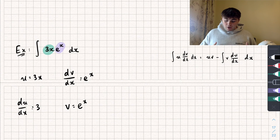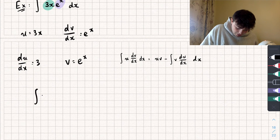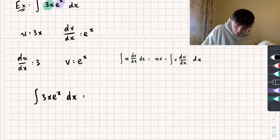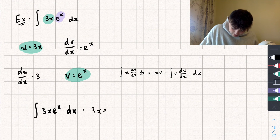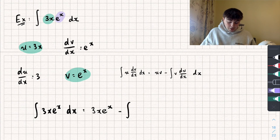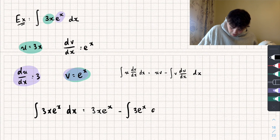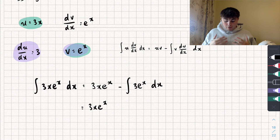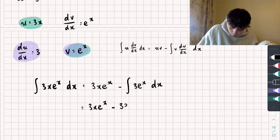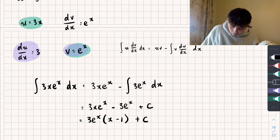Once I've done that, I can rewrite my integral using the integration by parts formula. We currently have the integral of 3x·eˣ with respect to x. Substituting into the formula: that equals uv, so 3x·eˣ, subtract the integral of v multiplied by the derivative of u — so we're calculating the integral of 3eˣ with respect to x. That's quite easy to integrate, giving 3x·eˣ minus 3eˣ, plus our constant of integration. We can factorise out 3eˣ to get 3eˣ(x − 1) + C as our answer.